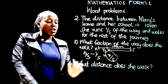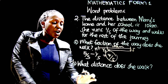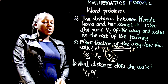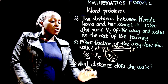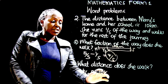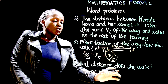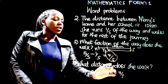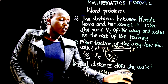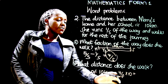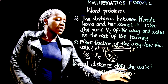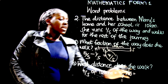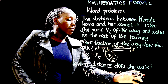Now, what distance does she walk? She walks 4 over 5 of the entire journey, which is 10 kilometers. So we calculate 4 over 5 of 10 — 'of' means multiply. 10 divided by 5 is 2, and 4 times 2 equals 8 kilometers. The section of the journey where she walks is 8 kilometers.